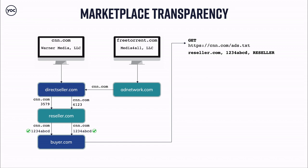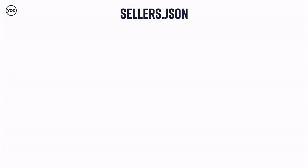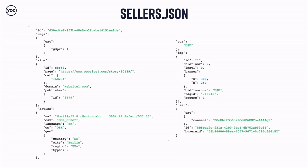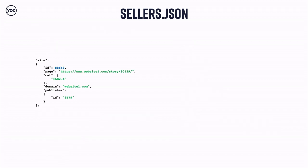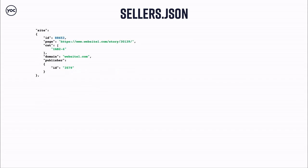There's another scenario where the reseller associates the same publisher ID with all requests coming from Direct Seller, because that's the entity they have a relationship with. The DSP would crawl cnn.com's ads.txt file and find the string mentioning reseller and publisher ID 1234abcd — meaning both bid requests would seem legit and ads.txt didn't really help here. Having sellers.json and the supply chain object provided with these requests would actually do the job.